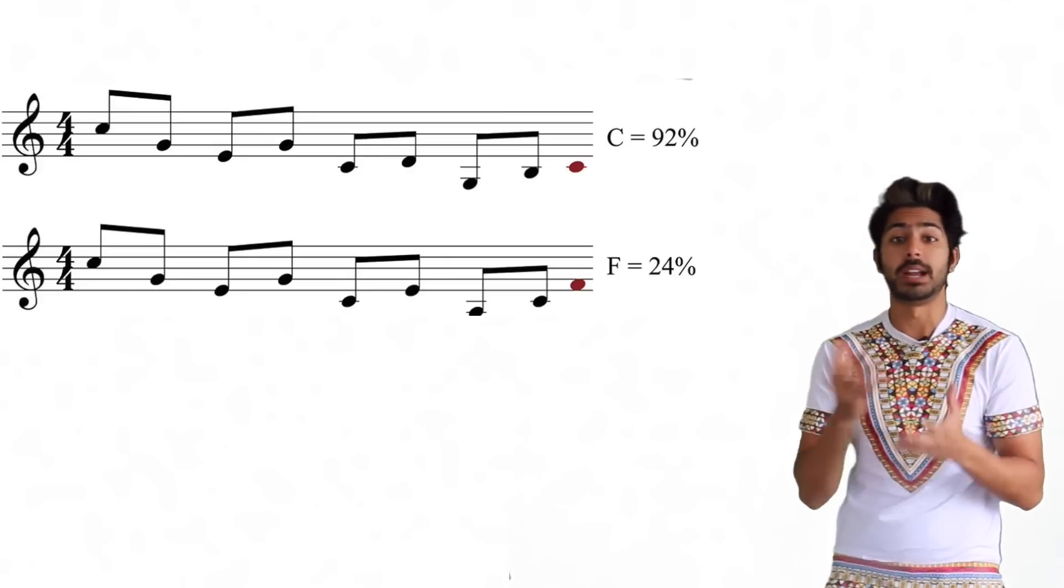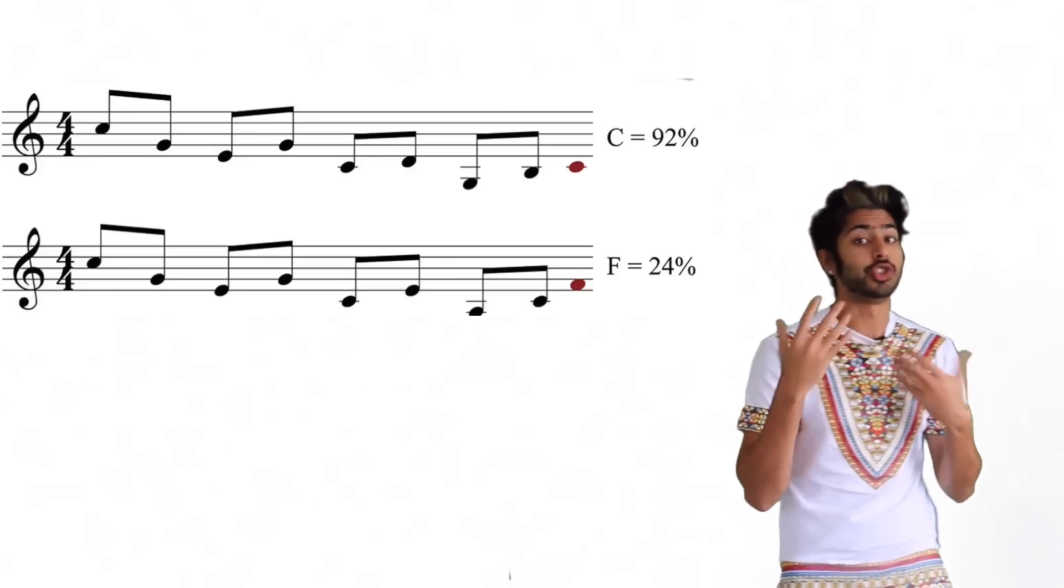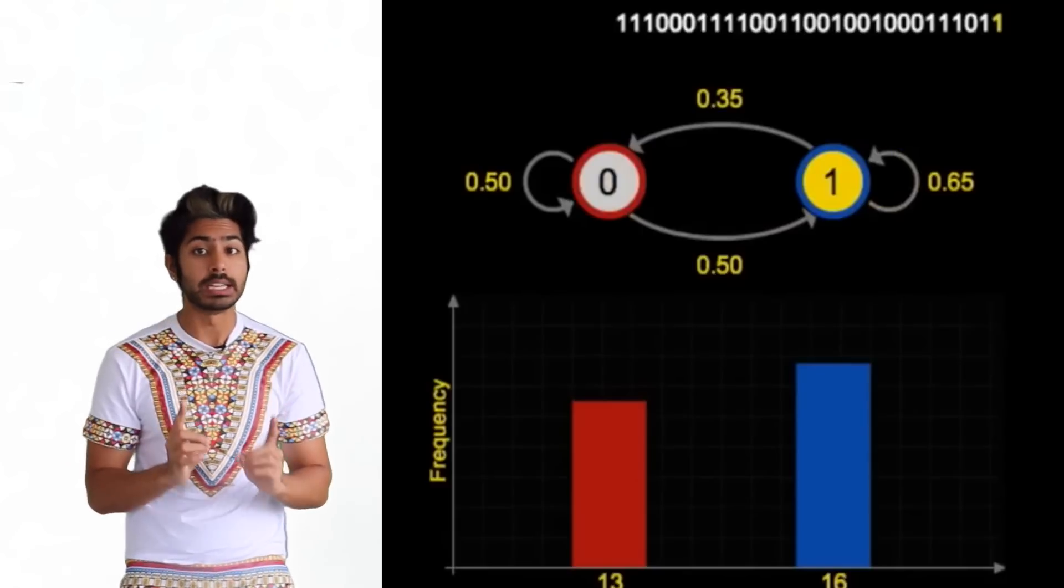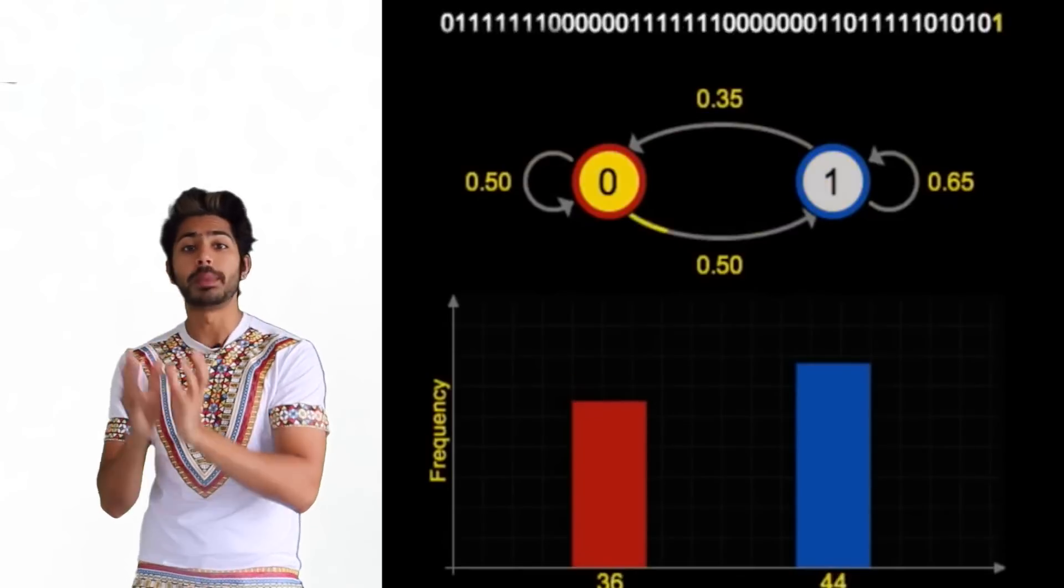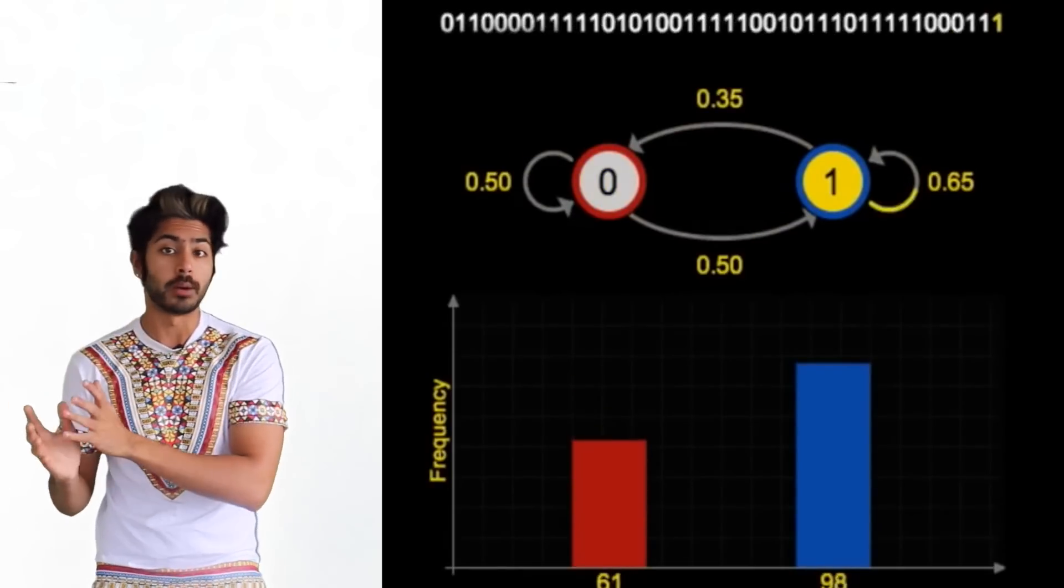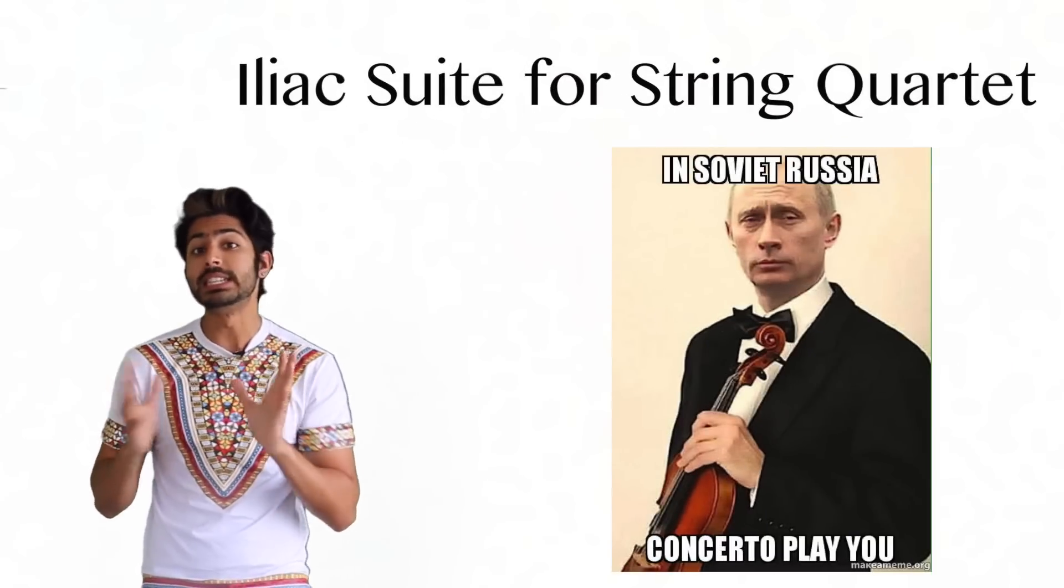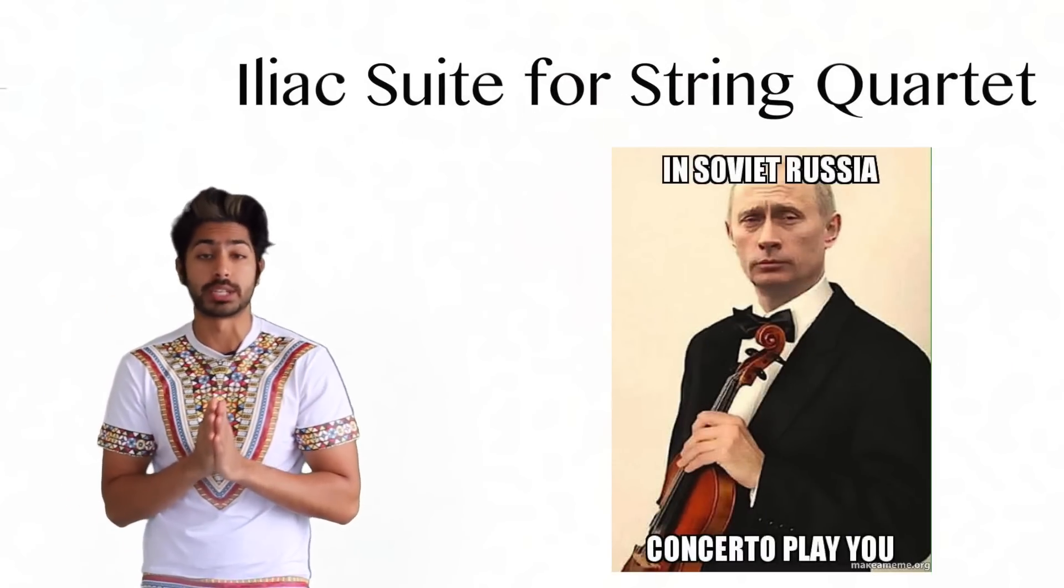So if a pitch didn't fit a piece, another note was generated. It also relied on probabilities via a Markov chain. It used the past to determine the probabilities of the future. The first piece was completed in 1957 and was called the Iliac Suite for String Quartet.